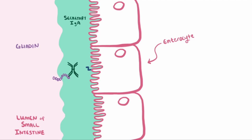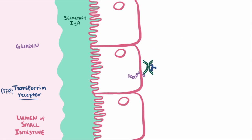this gliadin-IgA complex, for some reason, binds to a transferrin receptor, TFR, which is usually used to help absorb iron and seems to be overexpressed in patients with celiac disease. Once bound to this receptor, it's transcytosed across the cell from the apical to the basolateral membrane, or across the enterocyte and into the lamina propria, which is a thin layer that lines the gut wall.